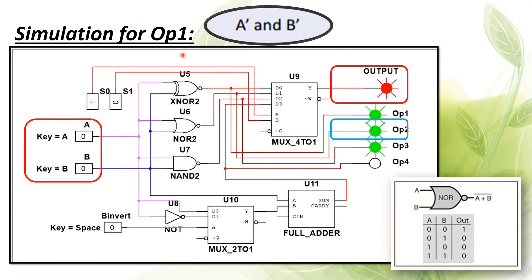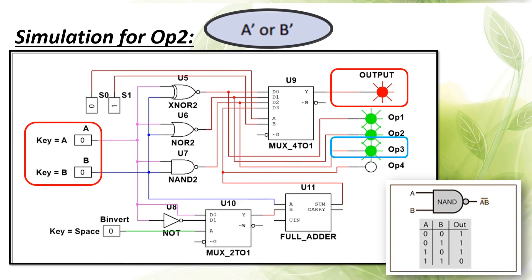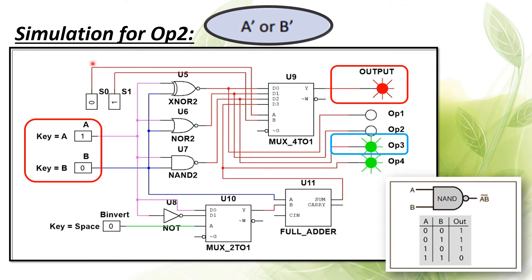Next will be operation one. We set S0 to one, and the output follows the same as the truth table of the NOR gate, which is correct. We found that operation two connected to the input pin on the four-to-one multiplexer is the same as the output pin.